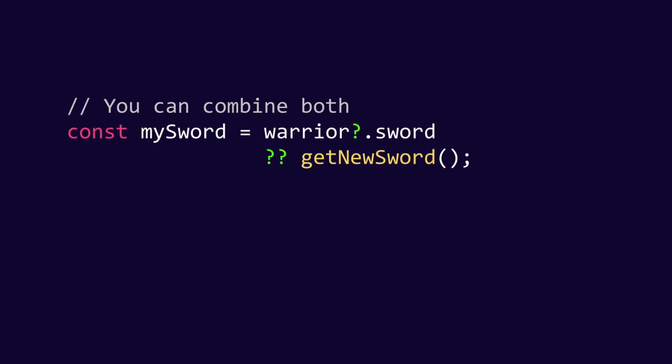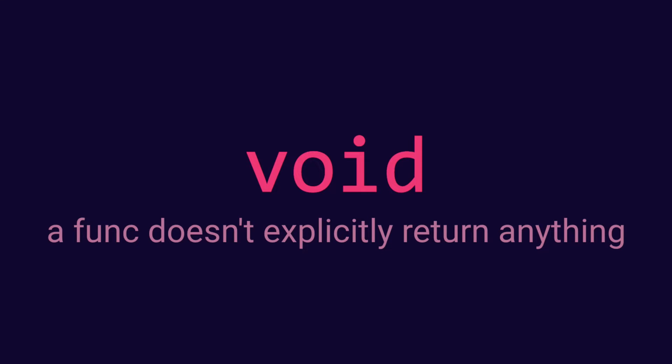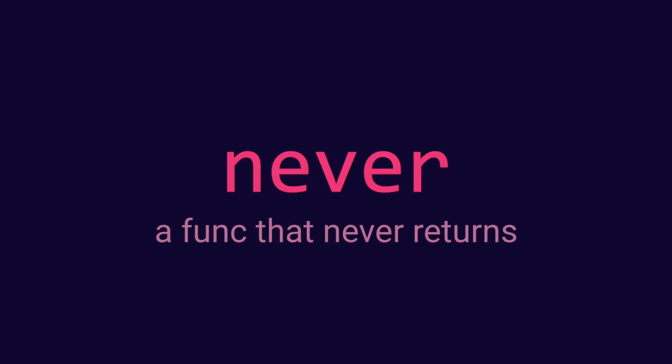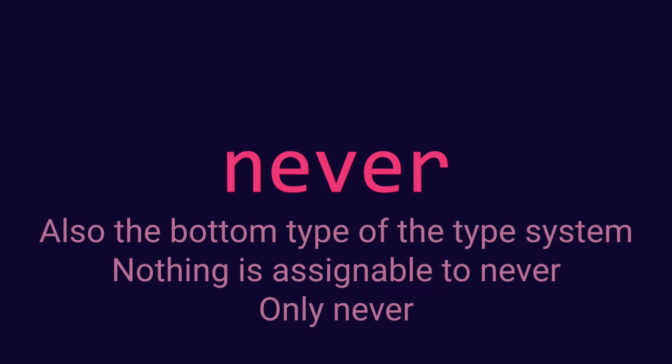You can often combine them. In this case we are getting my sword from warrior.sword, but only if warrior is defined — if it's not defined, I get a new sword. So that covers null and undefined. Then we have void and never: void represents when a function doesn't explicitly return anything — those would be functions with side effects. And never is a function that never returns — it's also the bottom type of the type system. At the top we have any; at the bottom we have never — nothing is assignable to never, only never.